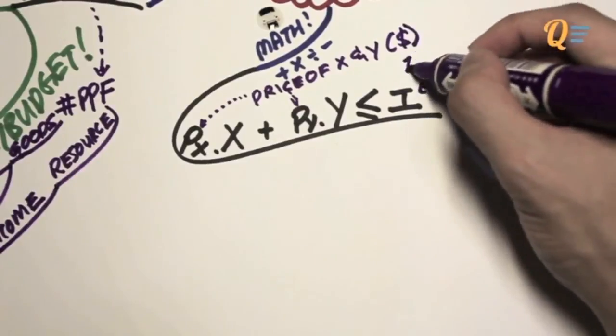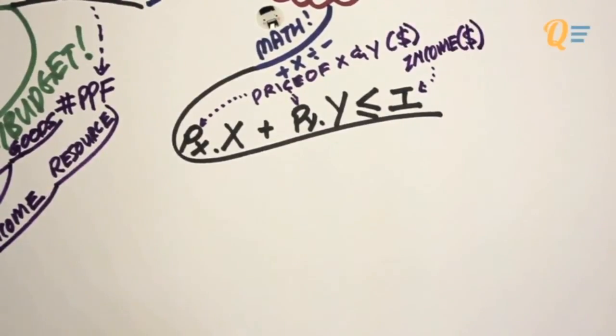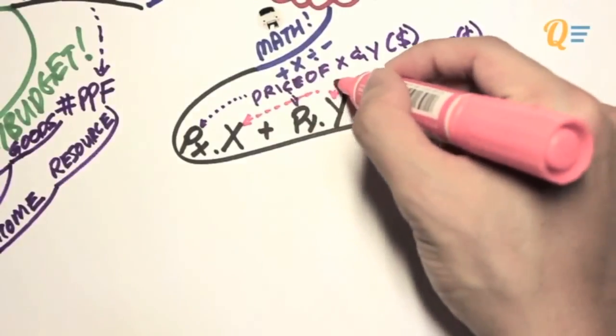Obviously, which is in monetary form, and I is your income, which is also in monetary form. We simply call it nominal income. X and Y is simply the quantity demanded for these two goods.